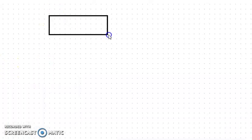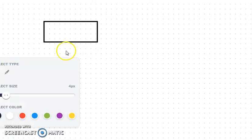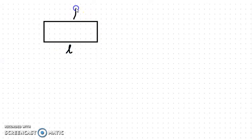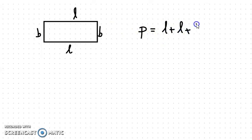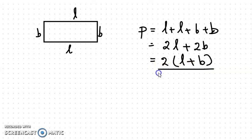In a rectangle, these two sides are known as length and the other two sides are breadth. We can find the perimeter by two times the length and two times the breadth — that is 2L plus 2B, which we can rewrite as 2 into (L plus B). That is the formula for finding the perimeter of a rectangle.